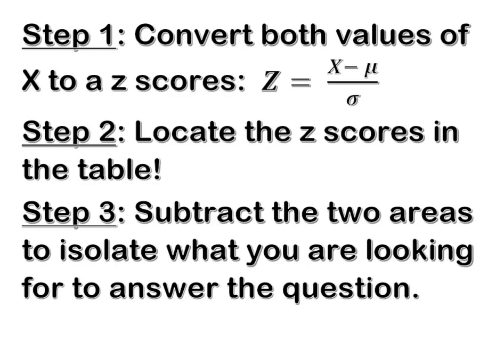So we still have a few basic steps, except in this case we've got to convert both values of X to z-scores. Then we have to look up both of those z-scores in the table. If we're solving for the area in between, we're going to have to subtract those two areas from one another in order to isolate what you're looking for to answer your question.